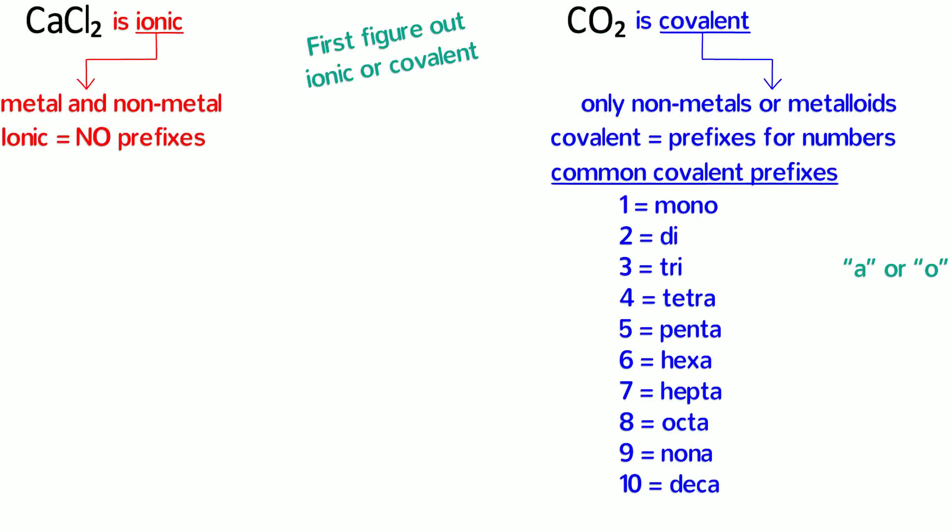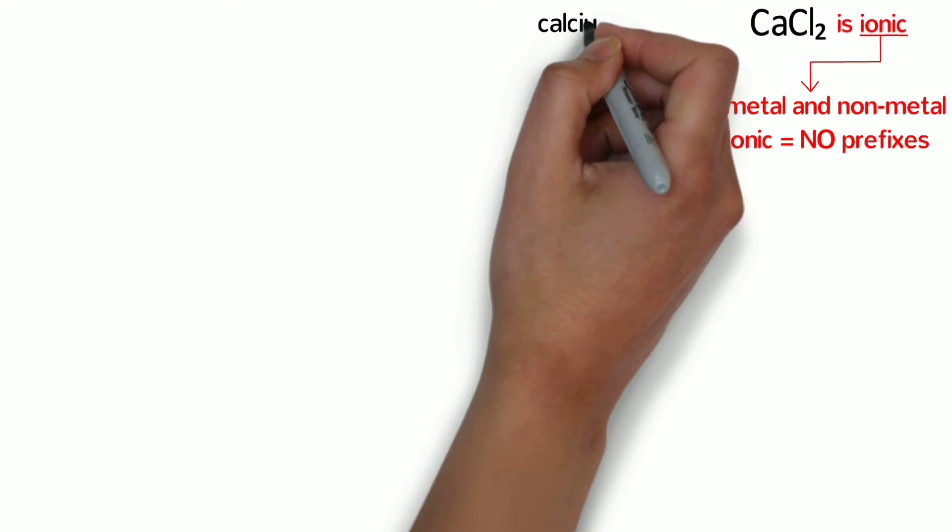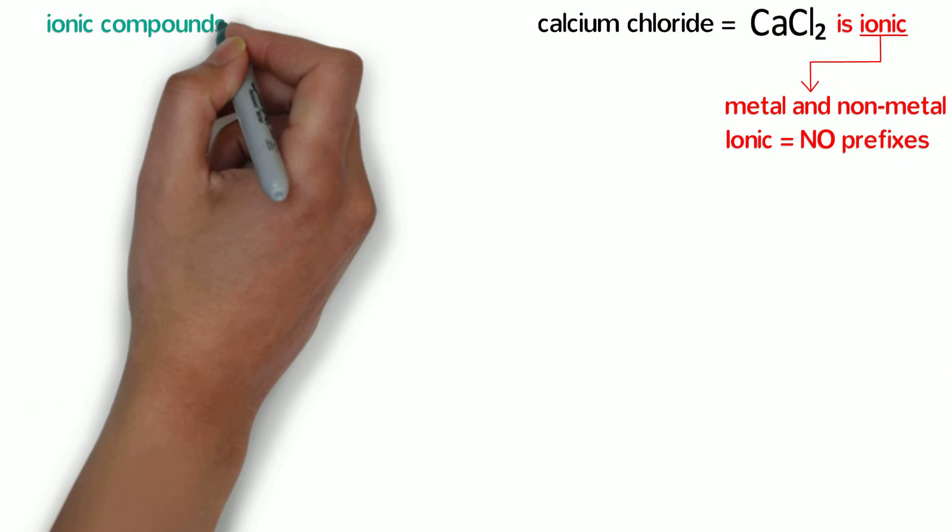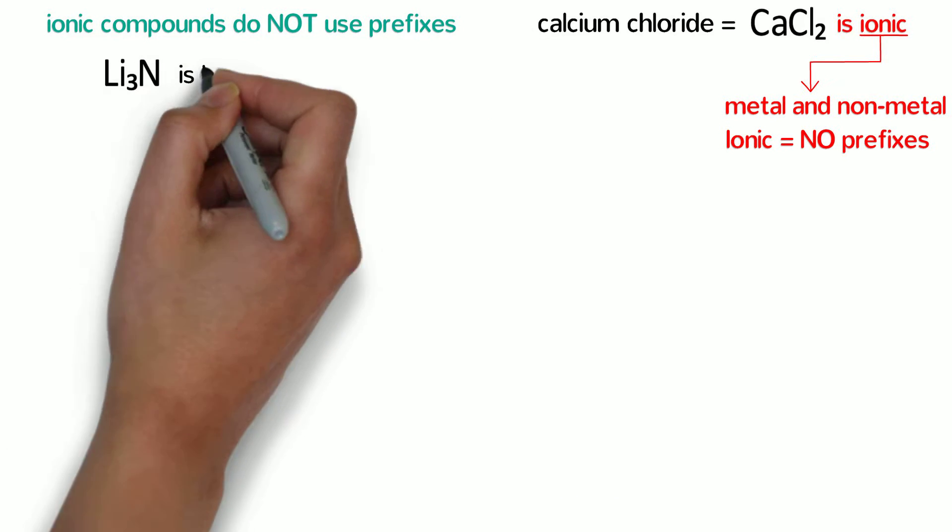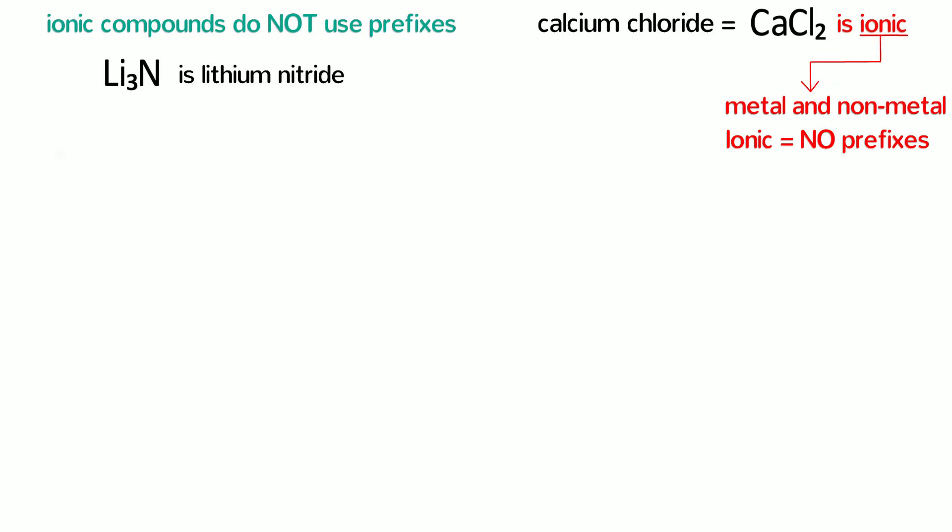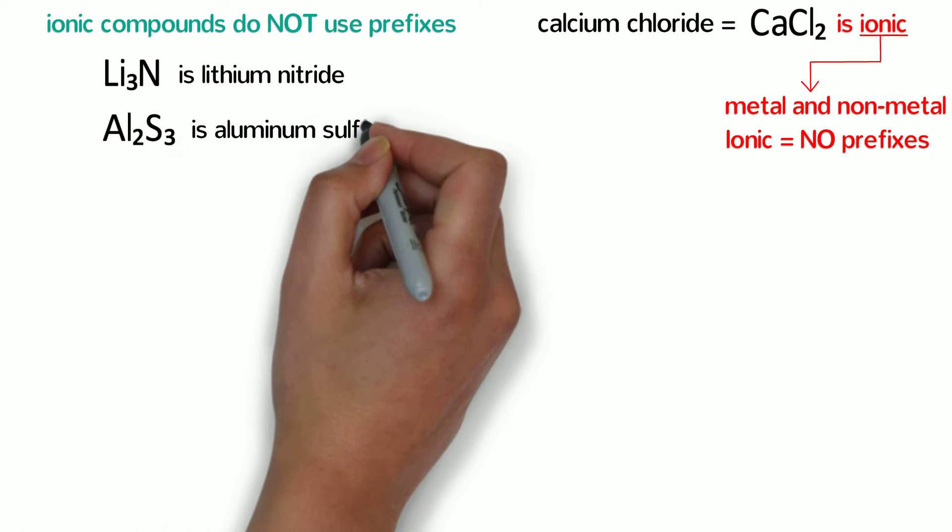But what about ionic compounds? Remember that CaCl2 is simply calcium chloride. In general, ionic compounds do not use prefixes. That means Li3N is simply lithium nitride and Al2S3 is simply aluminum sulfide.